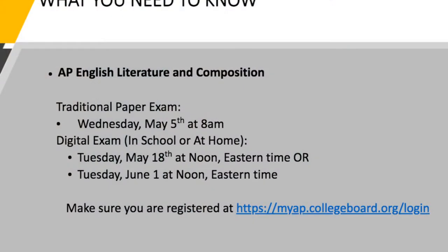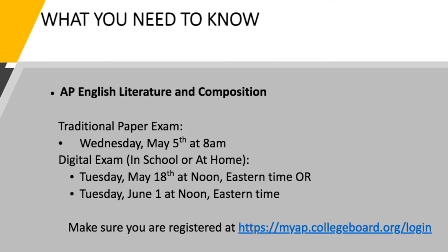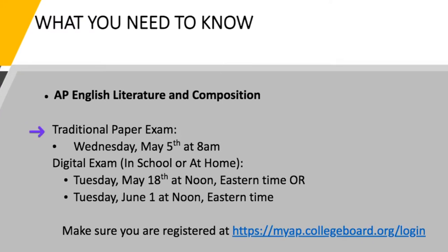We're really going to focus on the essays and good strategies for getting high scores on all the essays. For those of you who might have missed the first session, there are three possible dates when you might be taking the literature test. Remember, we're talking about English literature, not English language — that's a different test. The first date is Wednesday, May 5th. If that's you, you're taking a traditional paper and pencil exam with a test booklet and bubble sheet, scored electronically with graders reading your handwritten essays.